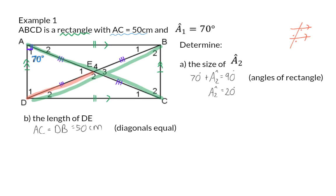Diagonal DB is divided into two equal parts. That means that DE is the same length as EB, and therefore we know that DE should be half of 50, and that is 25 centimetres. And our reason will be that the diagonals bisect each other.